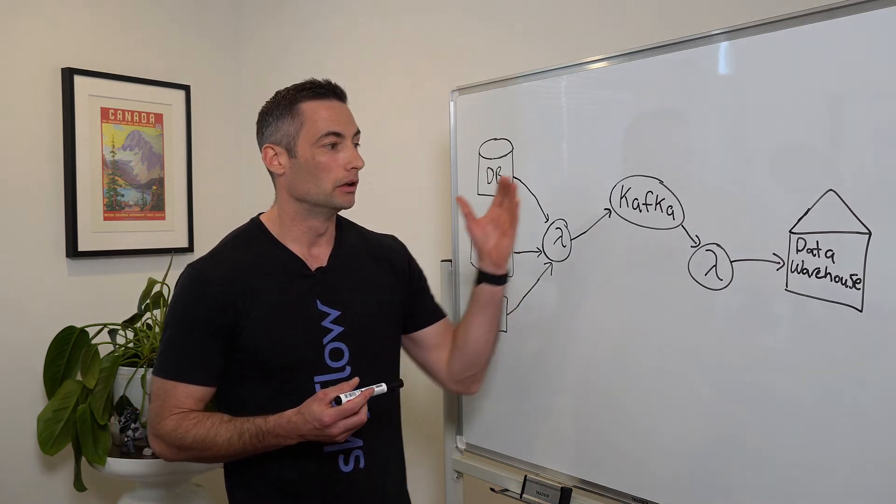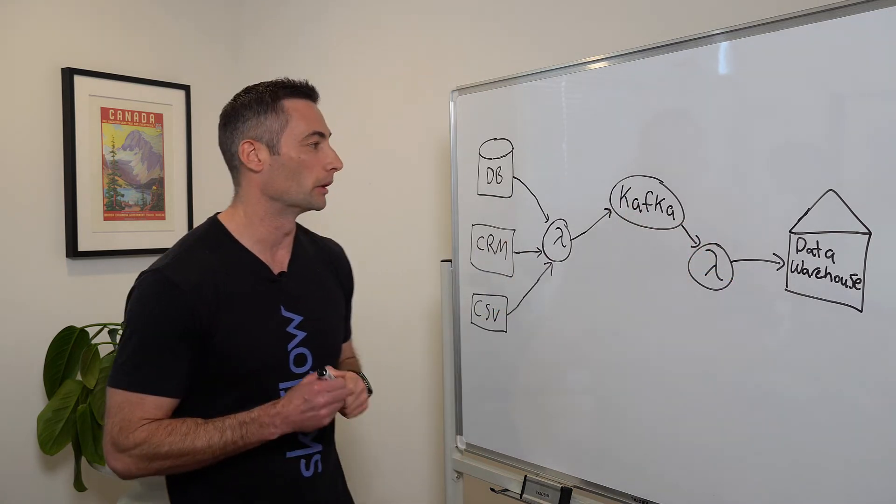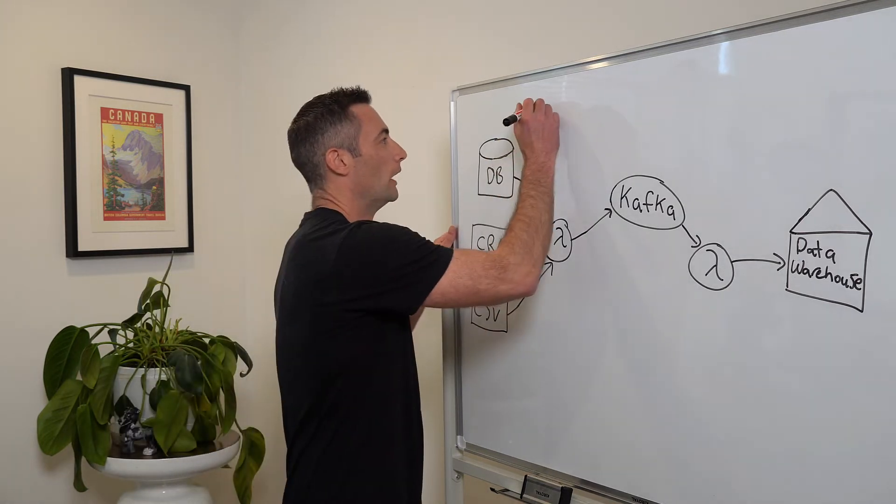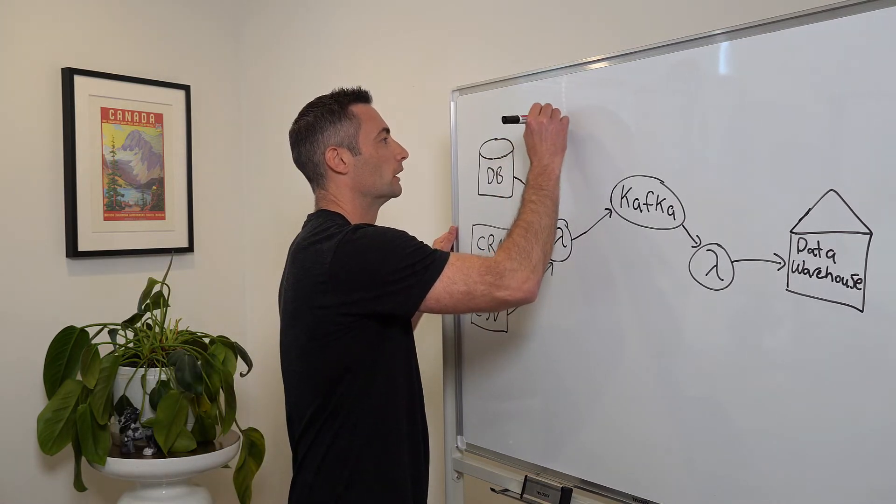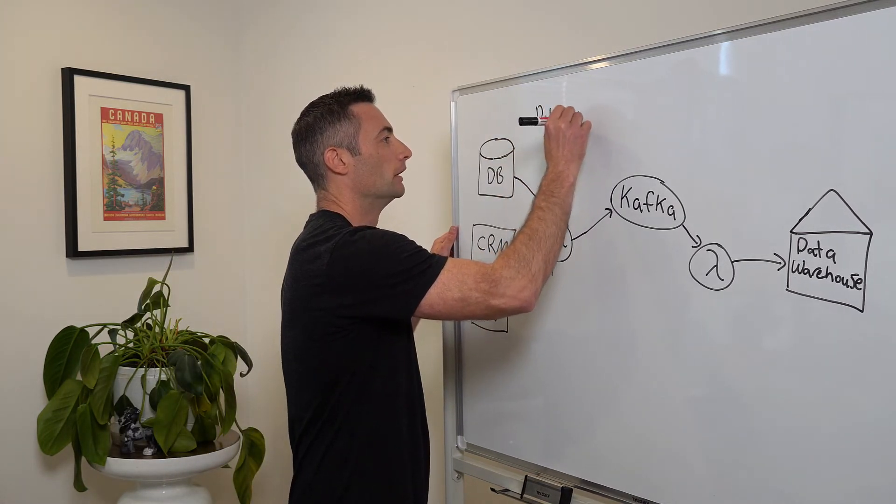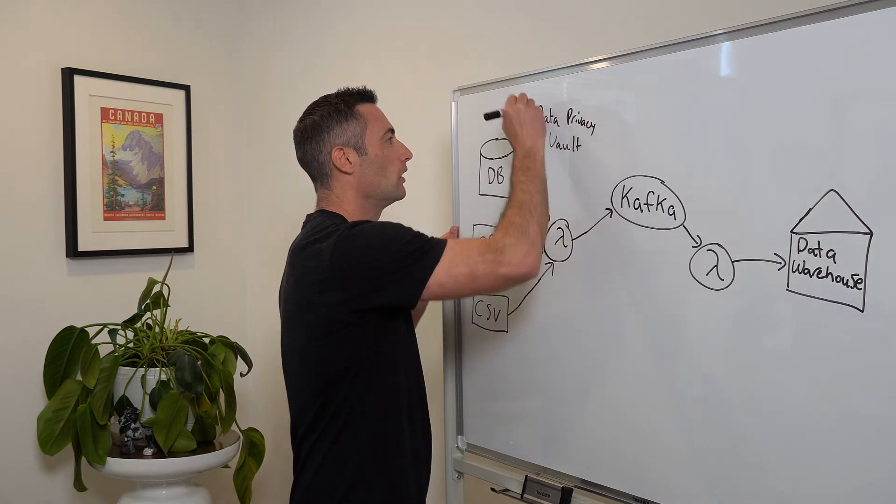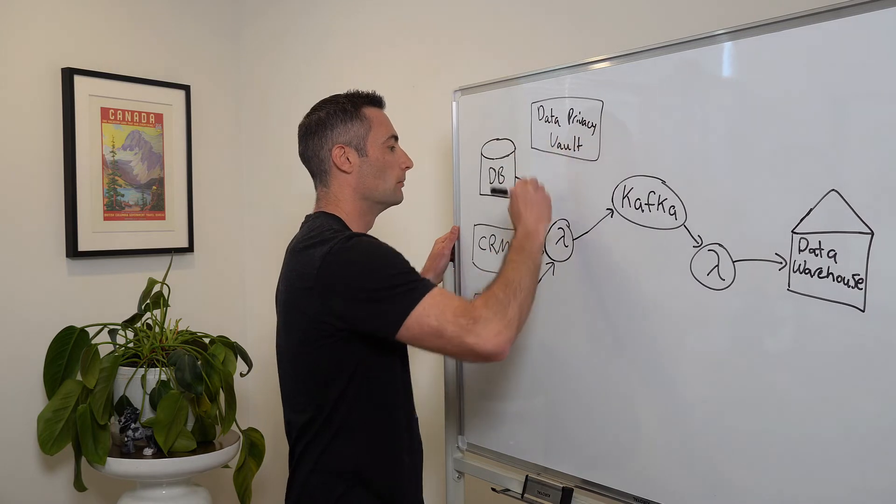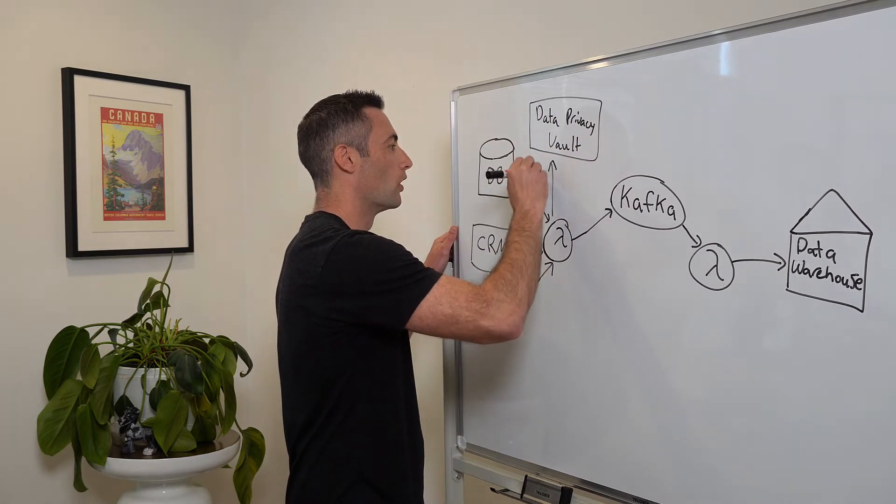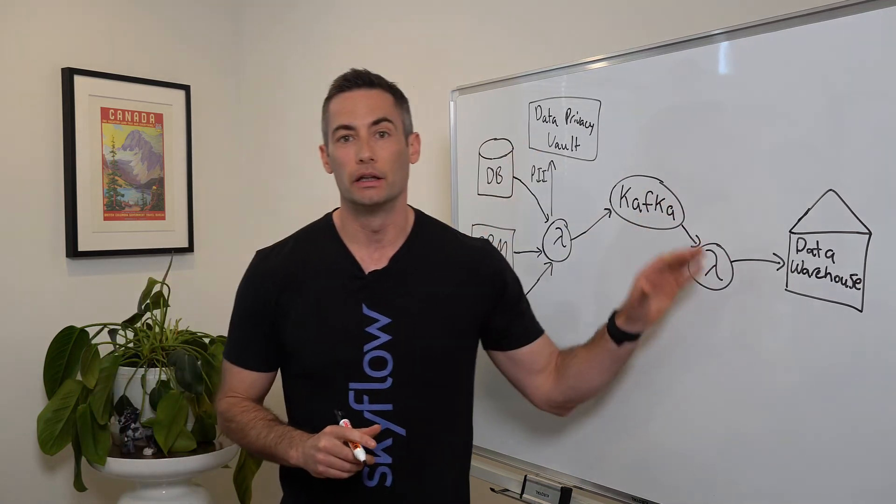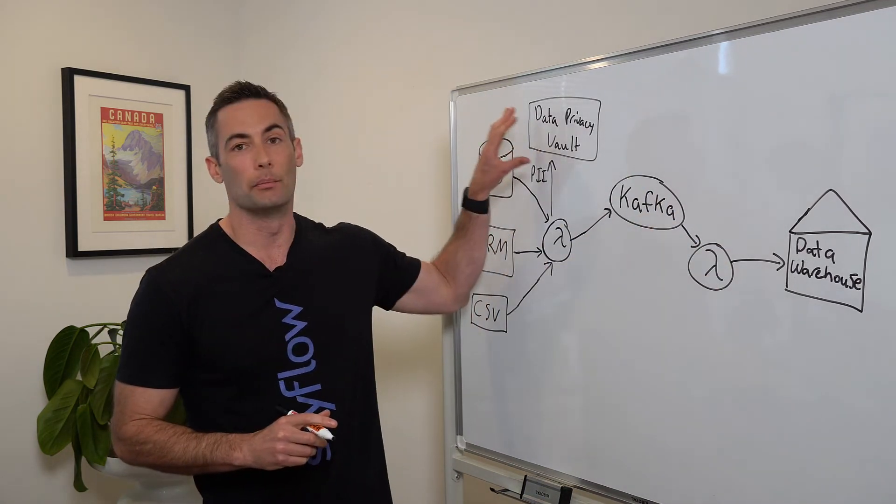And essentially stop storing the data in the data warehouse and store it in this data privacy vault. And the place that makes the most sense to do that is up here where we're first encountering the PII that's entering into our pipeline. So we're going to add the vault here. And this vault is going to become the single source of truth for all of the customer PII. So we're decoupling the application data from the sensitive data.